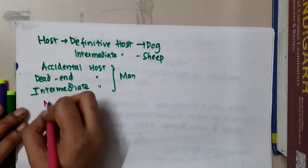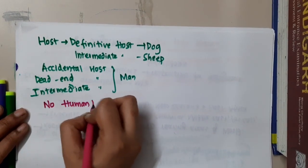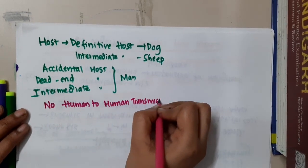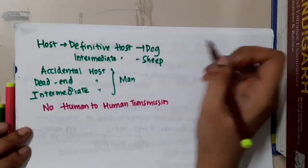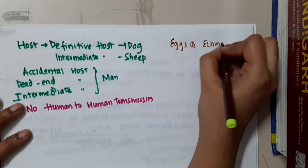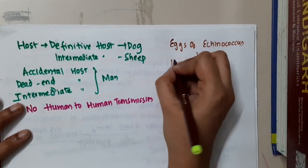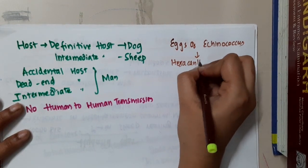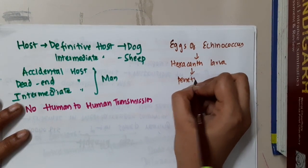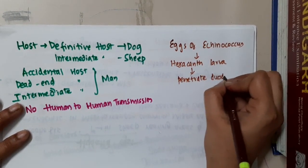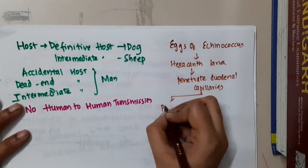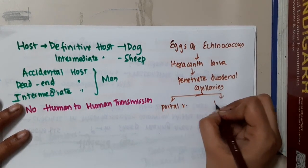There is no human to human transmission in hydatid cyst. The eggs of Echinococcus form a hexacanth larva, which penetrates the duodenal capillaries and then the portal vein and inferior vena cava.